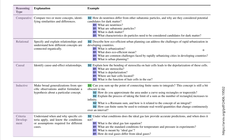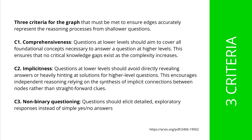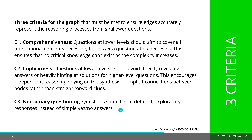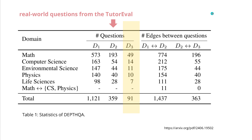They did a lot of work, and this is a beautiful dataset that I will also use in my work, along with the evaluated dataset from Princeton University on science. They found they have to impose three criteria on this graph for the system to work: comprehensiveness, implicitness, and non-binary questions — meaning don't answer just yes or no, but give text output.